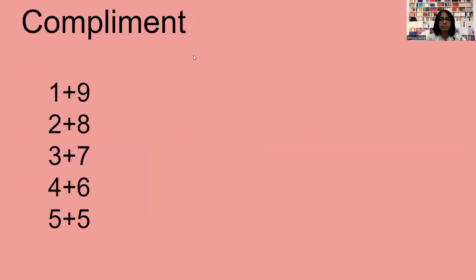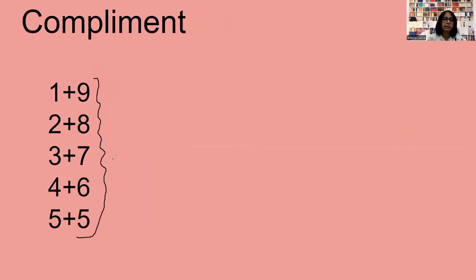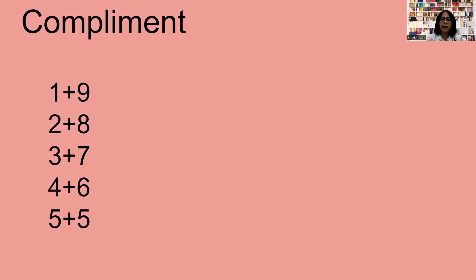We have already learned about the complement. The complement of 9 is 1, and the complement of 1 is 9 — that means we get 10 when we add any number with its complement. You can see: 1 plus 9 is 10, 2 plus 8 is 10, 3 plus 7 is 10, 4 plus 6 is 10. So the complement of 6 is 4, because 6 plus 4 equals 10.